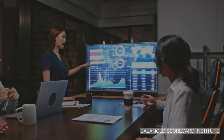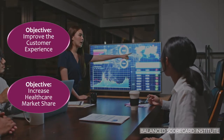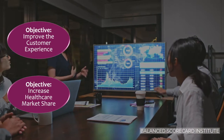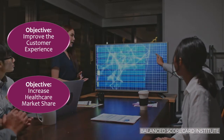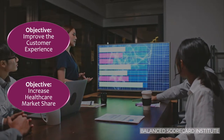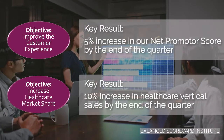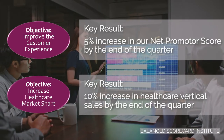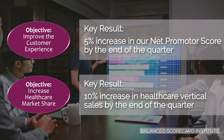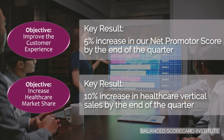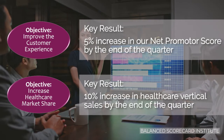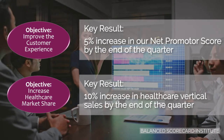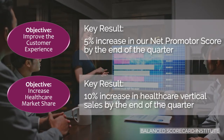In the OKR model, objectives capture what you want to accomplish in a qualitative sense, while key results capture what you want to accomplish in a measurable sense. They should be designed to both drive aspirational improvement and create an analytical basis for decision making.